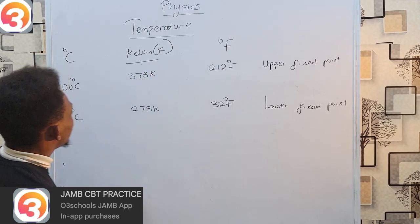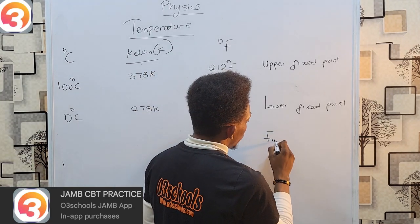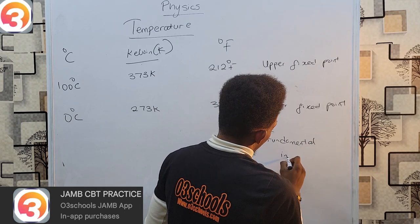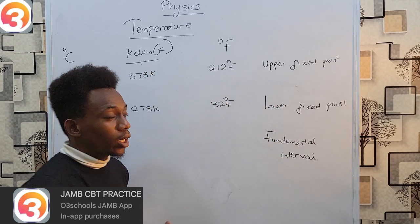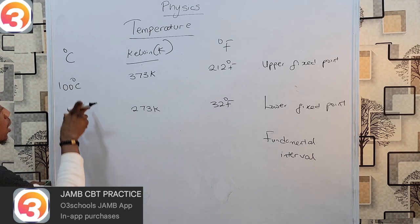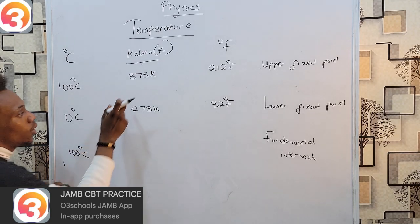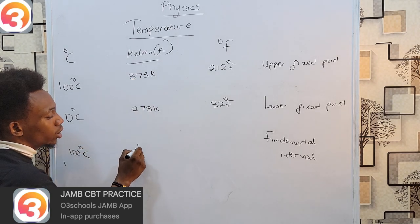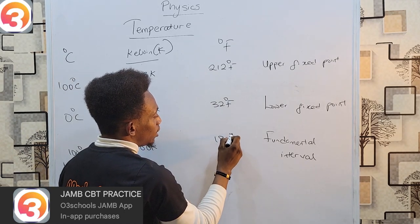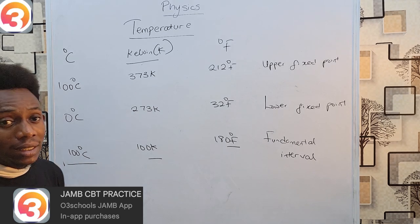These values ought to be committed to memory because in questions we have to apply them. There's also one more thing, not as important, but we should probably know it as well: the fundamental interval. This interval is simply what you get when you subtract these temperatures. For example, 100 minus 0 is 100 degrees Celsius. 373 minus 273 is 100 Kelvin. And 212 minus 32 is 180 degrees Fahrenheit. These are the fundamental intervals.